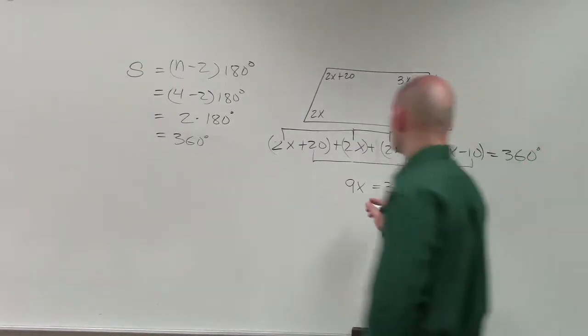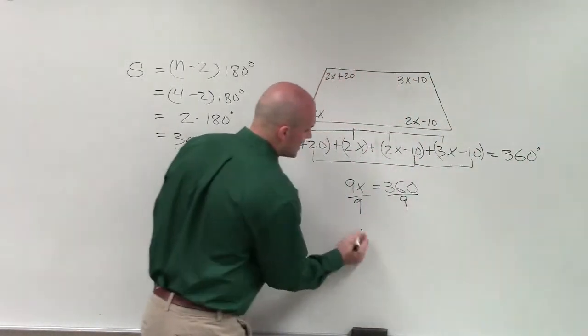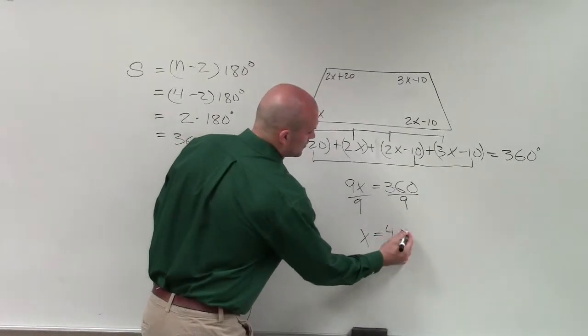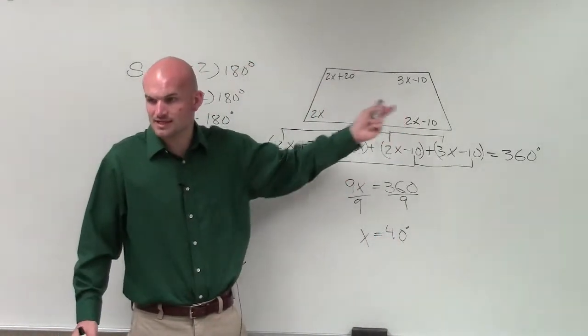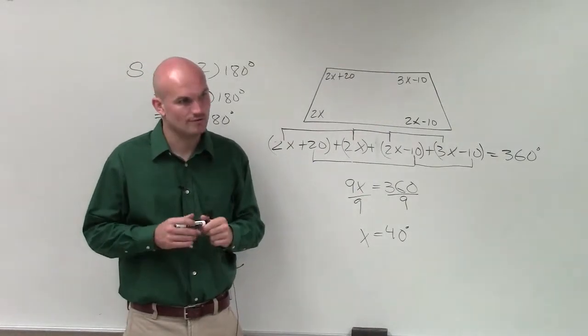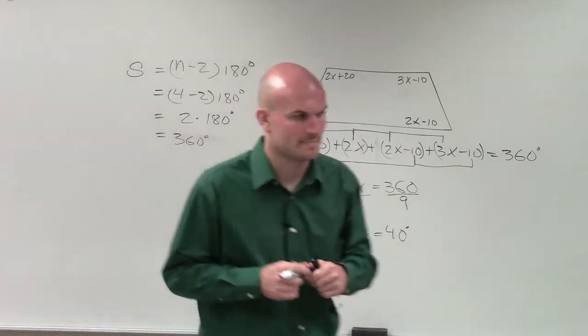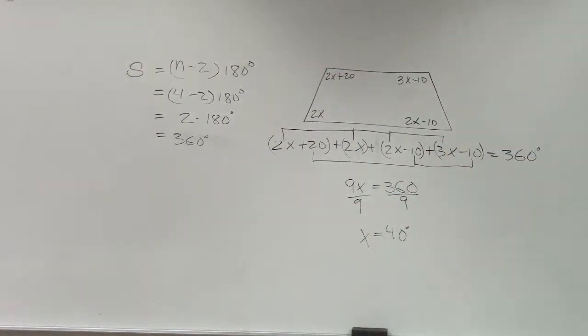So then I can just divide by 9, and x equals 40 degrees. Therefore, the measure of x in this polygon is going to be 40, OK? Any last questions?